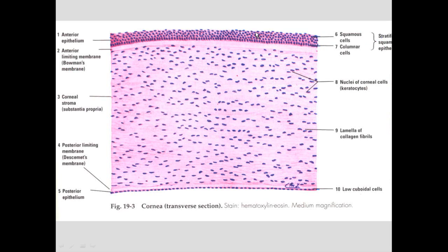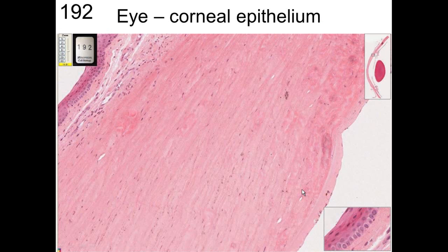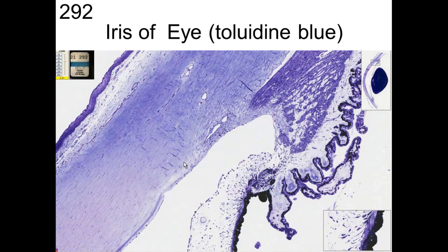The cornea itself has different layers. On the surface is stratified squamous epithelium with cuboidal cells along the base. Below that is Bowman's membrane — it's not a true membrane because it can't be separated from the rest. Then there are the stromal cells, the keratocytes with visible nuclei, followed by Descemet's membrane, and finally a posterior endothelium — this layer is actually endothelium, not epithelium.